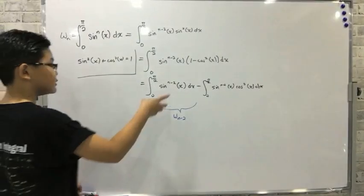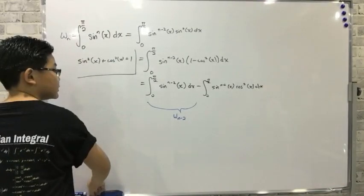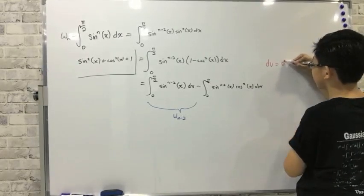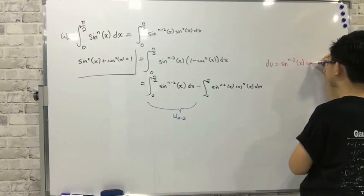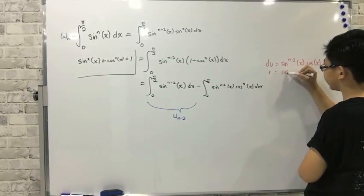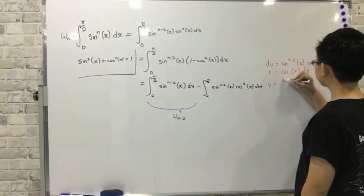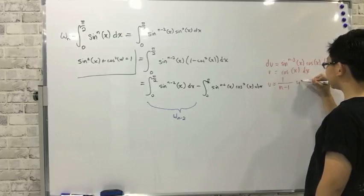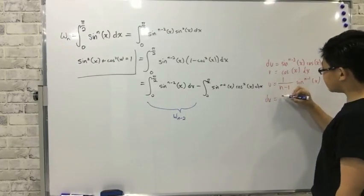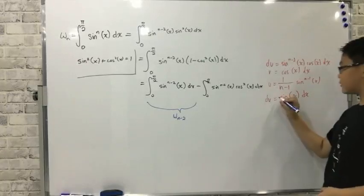Now we need to figure out this second integral. We need to use integration by parts. So, using the product rule, we can firstly say that du is equal to sin to the n minus 2 of x cos of x dx. Then we can have v equal to cos x. Now, integrating du, we get u equal to 1 over n minus 1 sin to the n minus 1 of x. Then dv is equal to negative sin of x dx.